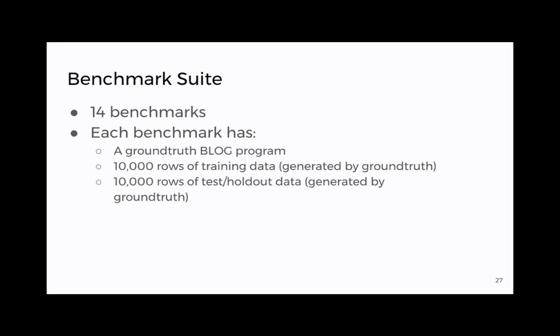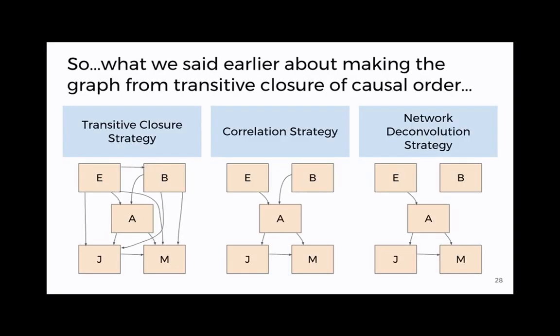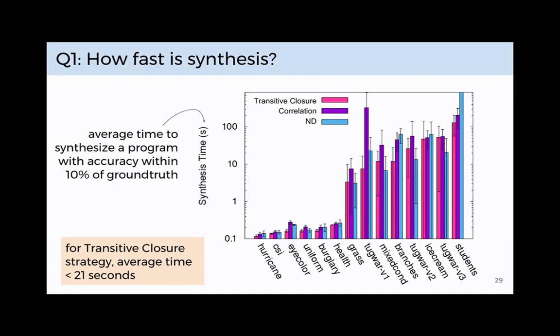And with that we're ready to do eval. So we had a benchmark sweep. 14 benchmarks. Each of them was associated first and foremost with a blog program. Basically our ground truth that we actually used to generate two data sets. One test data set one training data set both with 10,000 rows. So pretty big. And I want to get back just a moment to how we created those topologies. What I said earlier about using the transitive closure. That was sort of true. We actually tried a few different approaches. It turned out the transitive closure one was the one that works best so that's why we're focusing there. But you'll see a few different strategies reflected in the chart here.